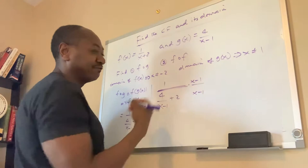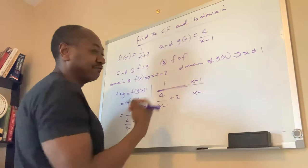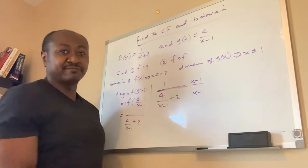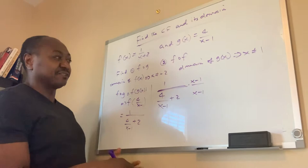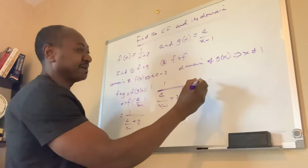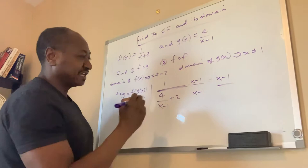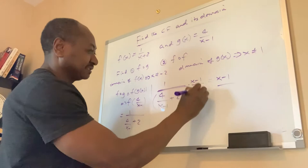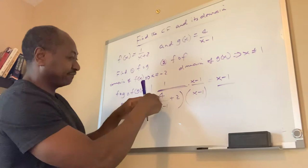If I multiply here by x minus 1 and multiply here by x minus 1, I've really not done anything to this function, because x minus 1 divided by x minus 1 is 1. But what it does help me do is solve this problem. If I multiply 1 by x minus 1, my numerator is going to be x minus 1. My denominator — you're looking at all of this times x minus 1.